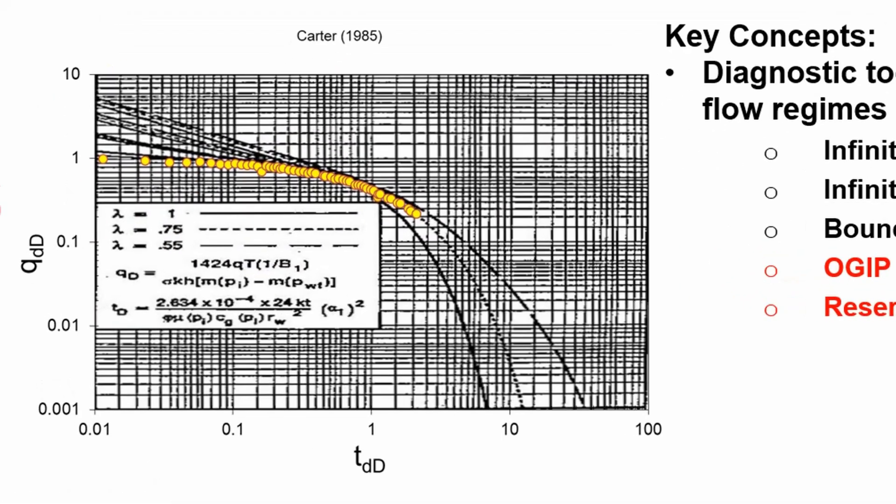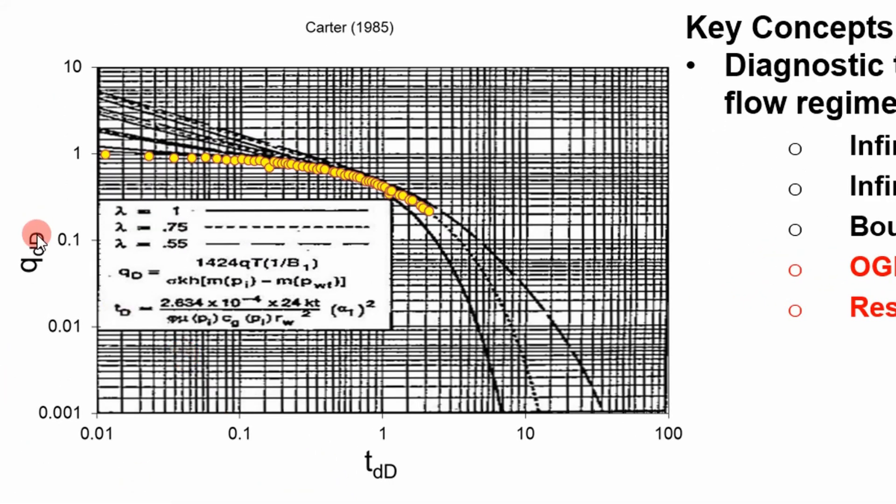So this is a Carter type curve. It plots dimensionless rate versus dimensionless time, and you can see here these are just computer-generated curves, and these curves are going to a vortex and then come out and spread out. What you do is you plot your data on here and you try to fit it adjacent to one of these curves where your data goes through this vortex.